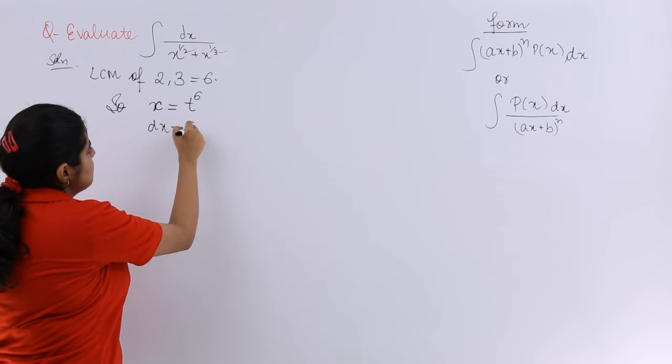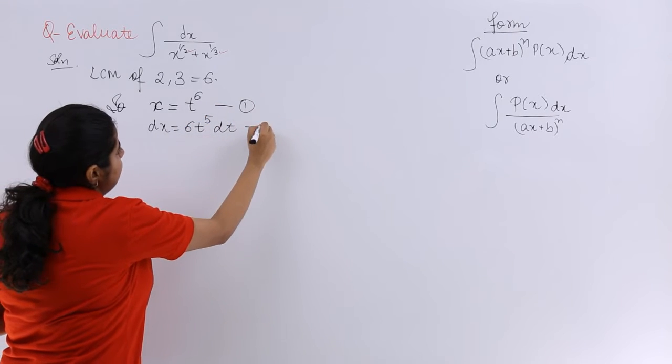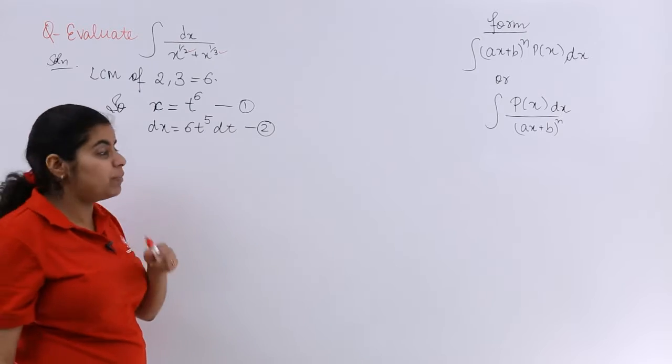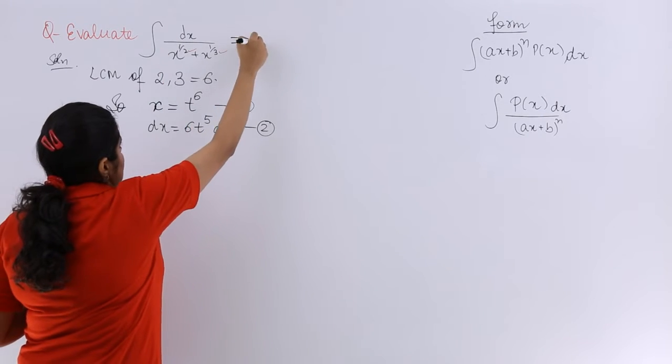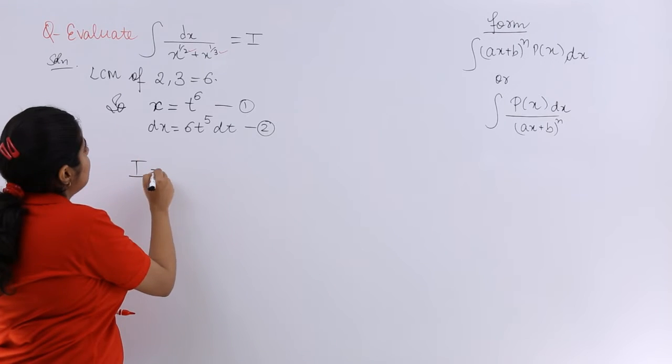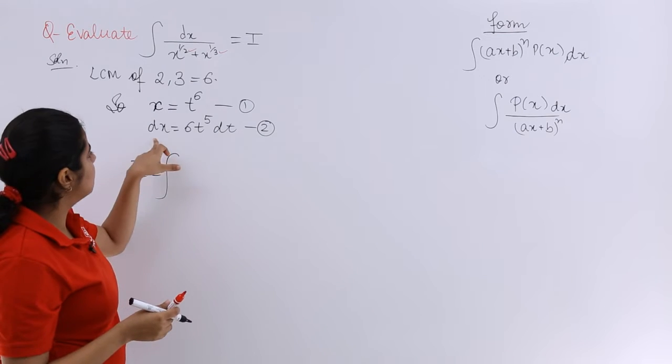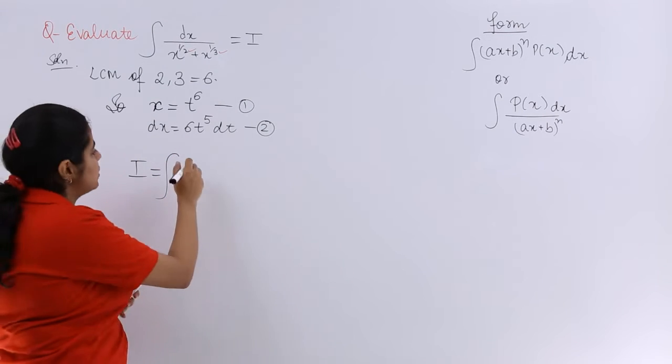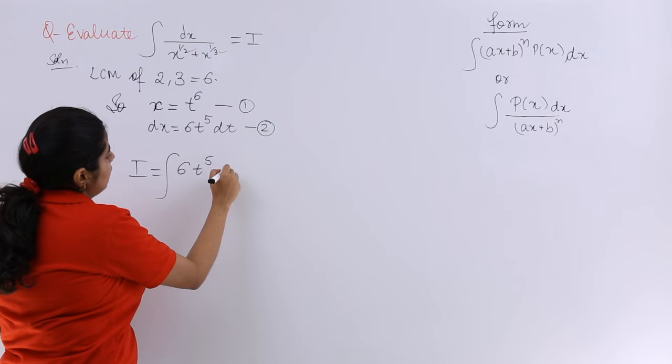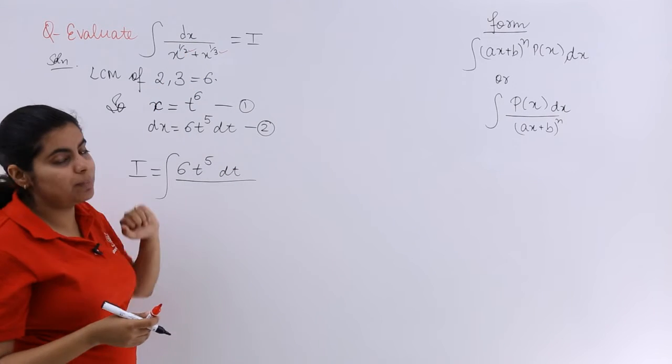First find dx also. So dx is nothing but 6t raise to the power 5 dt. If this is your equation number 1, this is your equation number 2. If my question can be taken as I, now I would be easier to explain it. So I is what? I is integration of dx. What is dx? dx is nothing but 6t raise to the power 5 dt upon x raise to the power 1/2.